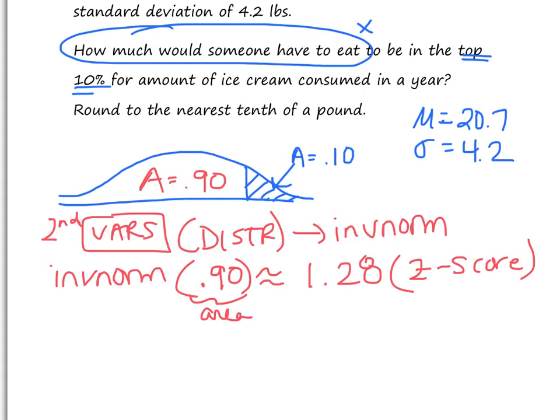So what this is saying is if I want to be in the top 10% of amounts of ice cream consumed in a year, it means I have to be 1.28 standard deviations above the mean, because it's positive. That means this z-score right here is 1.28. So think about what that means - I have to be that many standard deviations above the mean.